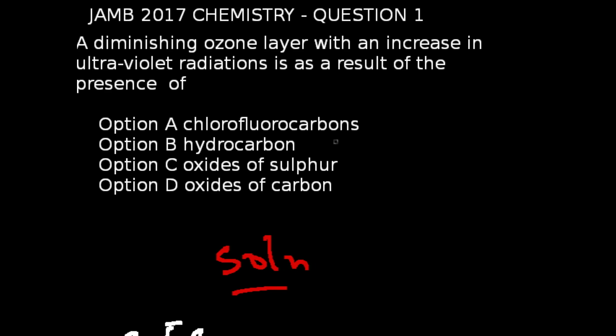Question number one of the JAM 2017 chemistry exams: A diminishing ozone layer with an increase in ultraviolet radiations is as a result of the presence of? The correct answer to this question is option A, which is chlorofluorocarbons.